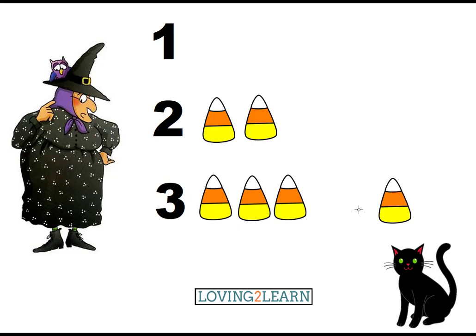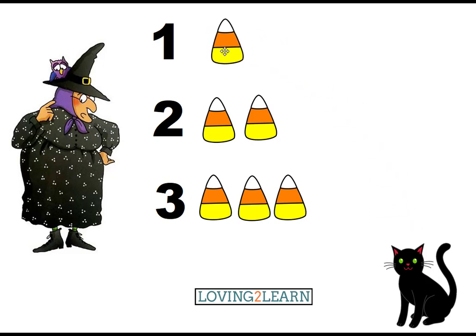...corns. Let's count the last row: one. Where's the number one? Here's the number one, so we'll bring that candy corn up here. Now we have the number one and one candy corn. That was a great job!